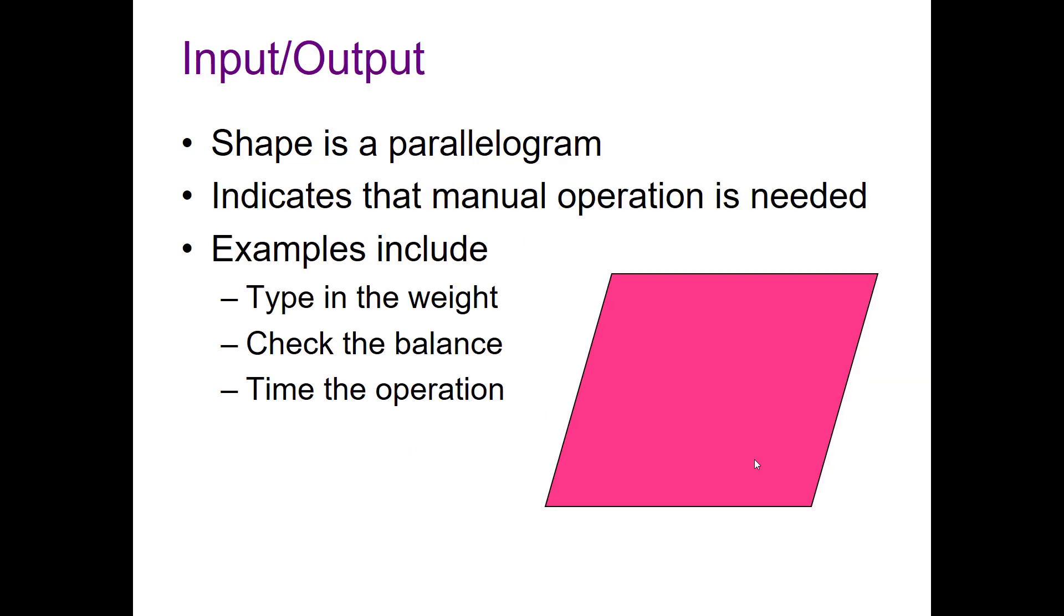And then we've got an input and output. The shape is going to be a parallelogram. It indicates that a manual operation is needed. Examples could be typing in a weight, checking the balance, timing an operation, waiting for an input, etc.